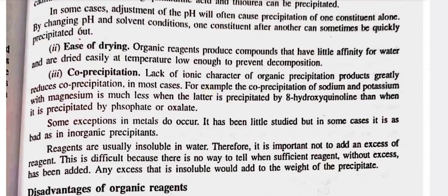Second, ease of drying — organic reagents produce compounds that have little affinity for water and are dried easily at temperatures low enough to prevent decomposition. Third, co-precipitation — lack of ionic character of organic precipitation products greatly reduces co-precipitation in most cases. For example, the co-precipitation of sodium and potassium with magnesium is much less when the latter is precipitated by 8-hydroxyquinoline than when it is precipitated by phosphate or oxalate.